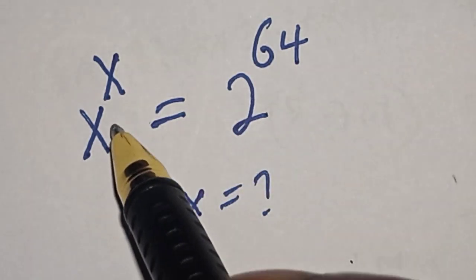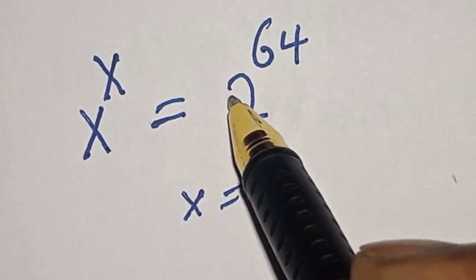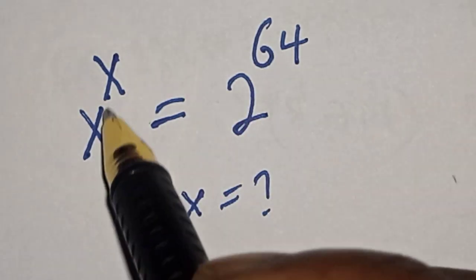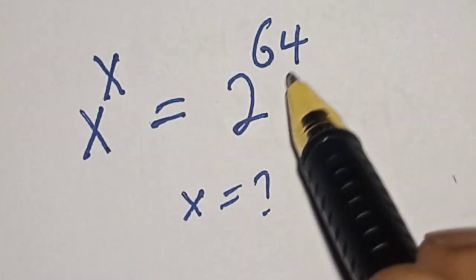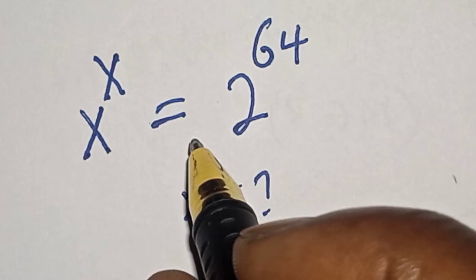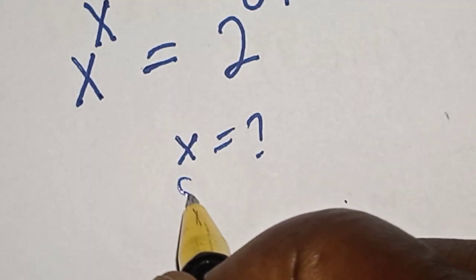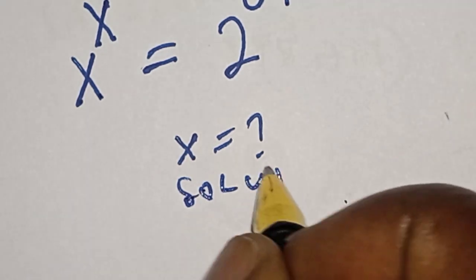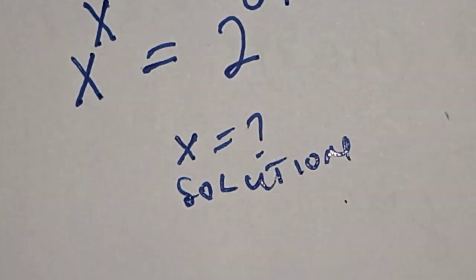Hello, welcome to Math Gist. In this class we want to find the value of s from this equation: s raised to power s equals 2 raised to power 64. Please like, share, comment and subscribe. Solution: